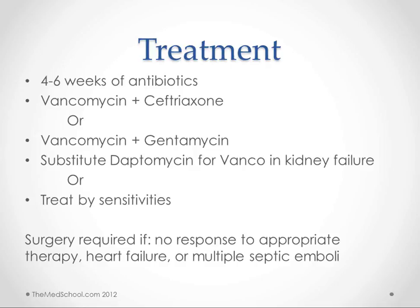So we have a positive blood culture and we're trying to know if this is endocarditis or just a blood infection — and that makes a difference in how long we're going to treat it. If we do meet the Duke criteria, then we're going to do four to six weeks of antibiotics. If we don't know what the organism is, we're going to do vancomycin plus ceftriaxone or vancomycin plus gentamicin. And if you have a kidney patient, substitute daptomycin for vancomycin.